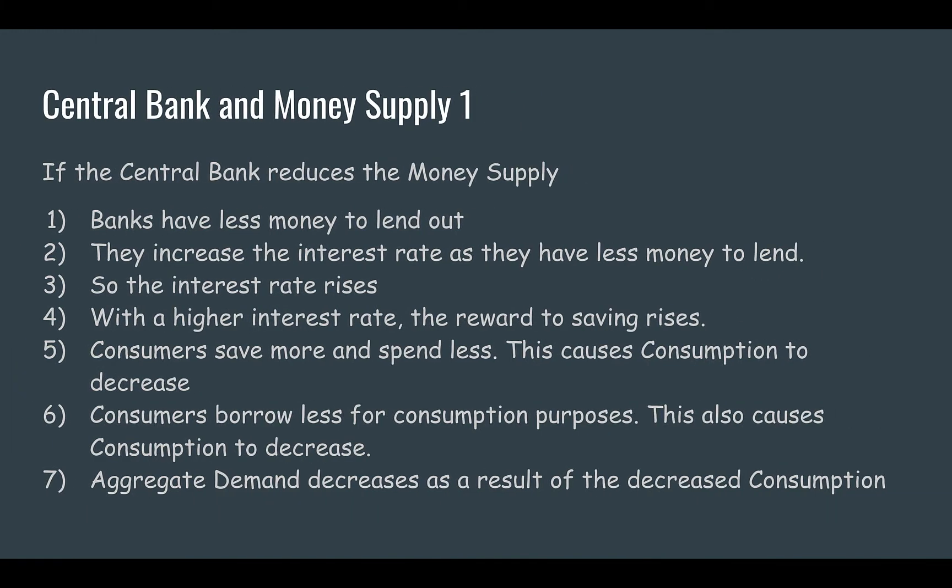If the central bank reduces the money supply, banks have less money to lend out. Banks are profit maximizers, and they make their profit from lending money to people. If the amount of money that they lend out is reduced, that means it's become more scarce. When something becomes more scarce, the price of it rises — think of an inward shift in the supply curve, which literally this is.